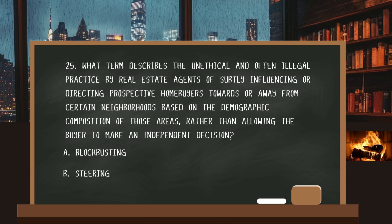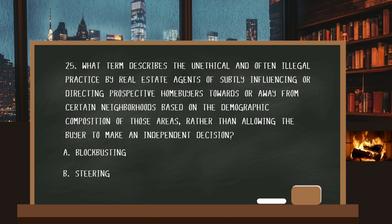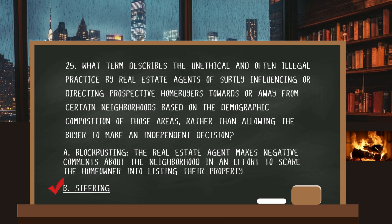Number twenty-five. What term describes the unethical and often illegal practice by real estate agents of subtly influencing or directing prospective homebuyers towards or away from certain neighborhoods based on the demographic composition of those areas, rather than allowing the buyer to make an independent decision? The answer is B: steering. Blockbusting is when the real estate agent makes negative comments about the neighborhood in an effort to scare the homeowner into listing their property.